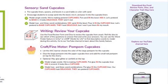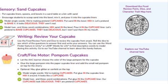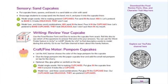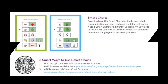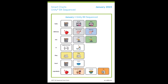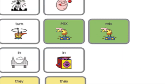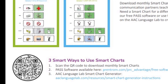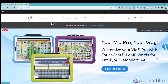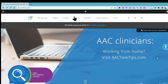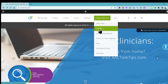Also, follow the QR codes in the Planner that will help you find resources to download for supplemental activities. You can see how to download Smart Charts, or you can make your own using our emulation software or the Smart Chart Generator on the AAC Language Lab. You can download Smart Charts each month for Unity 84 Sequenced, WordPower 60 Basic, and Lamp Words for Life Full. You can download the Smart Charts by following the QR code in the Planner, or go directly to our website at PrintROM.com, Caregiver Resources, and Activities.